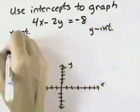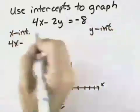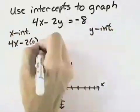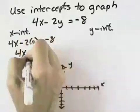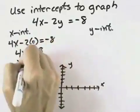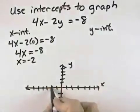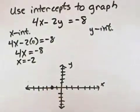For the x-intercept, we let y equal 0, so we have 4x minus 2 times 0 equals negative 8. Since 2 times 0 is 0, we have 4x equals negative 8. Dividing by 4, x equals negative 2. So our x-intercept, the point where we cross the x-axis, is at negative 2.